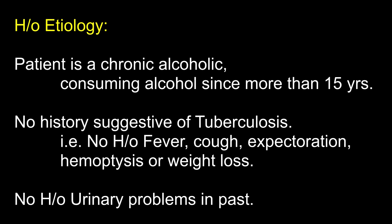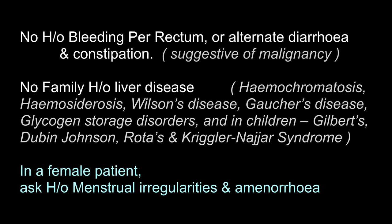No history suggesting tuberculosis — no history of fever, cough, expectoration, hemoptysis or weight loss. No history of urinary problems, no history of bleeding PR or bowel symptoms suggesting malignancy. No family history of liver disease. Which liver diseases are familial? Hemochromatosis, hemosiderosis, Wilson's disease, Gaucher's disease, glycogen storage diseases. In children: Gilbert's disease, Crigler-Najjar syndrome, Dubin-Johnson syndrome and Rotor syndrome are familial.